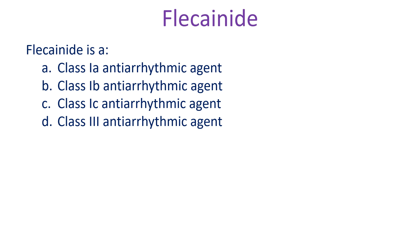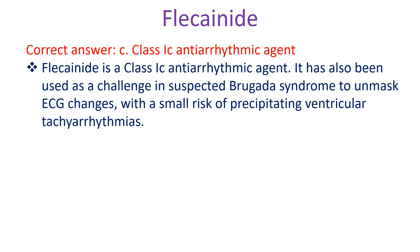Flecainide is a: A: Class 1A antiarrhythmic agent, B: Class 1B antiarrhythmic agent, C: Class 1C antiarrhythmic agent, D: Class 3 antiarrhythmic agent. Correct answer C: Class 1C antiarrhythmic agent. Flecainide is a Class 1C antiarrhythmic agent. It has also been used as a challenge in suspected Brugada syndrome to unmask ECG changes, with a small risk of precipitating ventricular tachyarrhythmia.